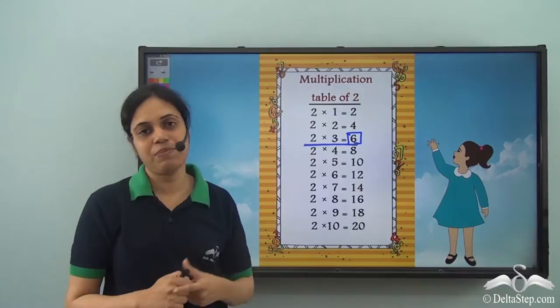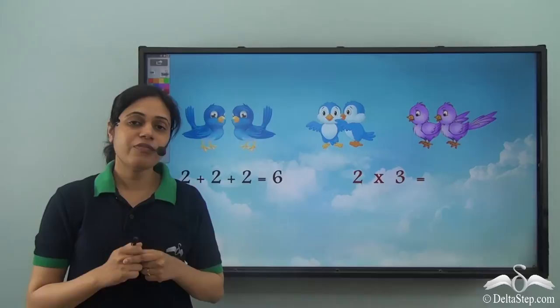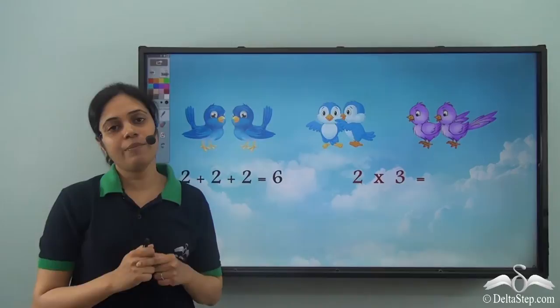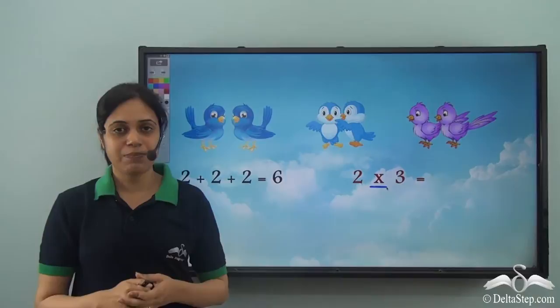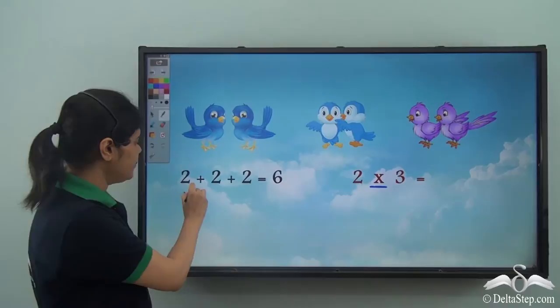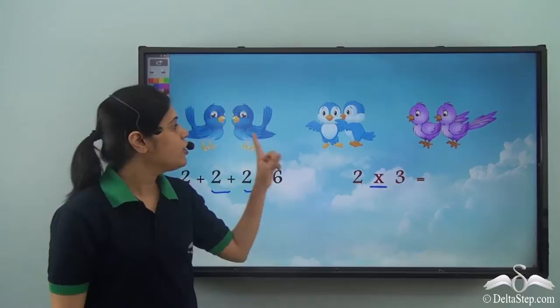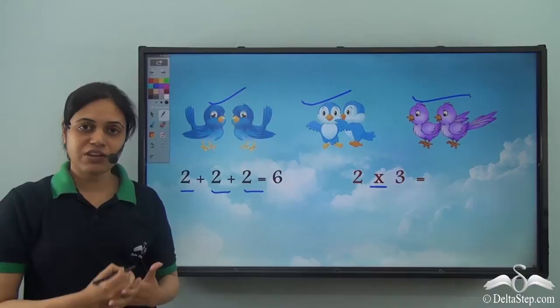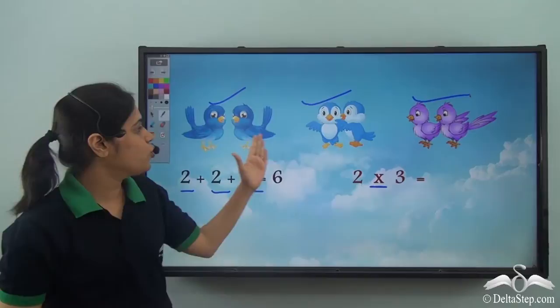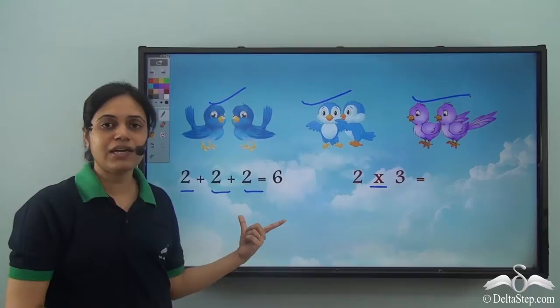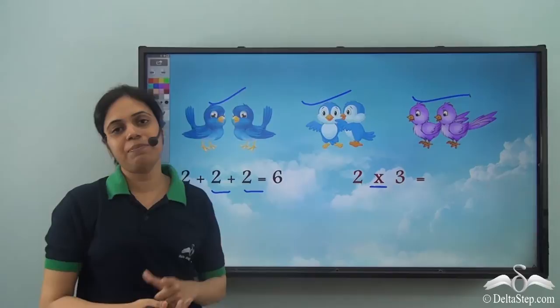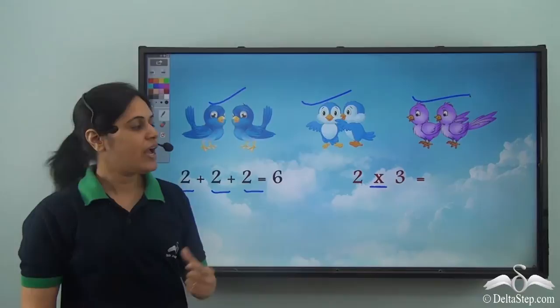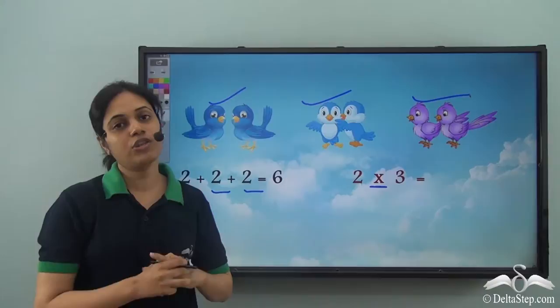So how do we get this multiplication table? Before that, let's first understand what multiplication is. This symbol stands for multiplication. This means that two is added three times, or there are two birds sitting on each of the three windows. Instead of adding two again and again — that is, adding two three times — I can simply multiply it by three. So three times two is the same as two added three times, which equals six.